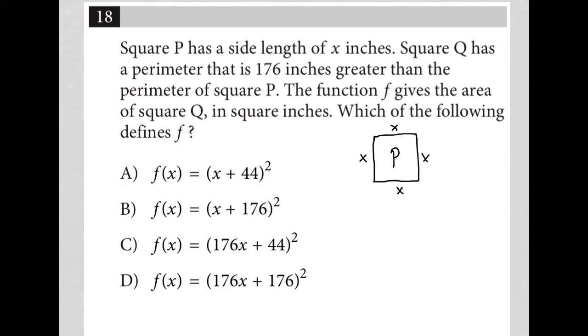Square Q has a perimeter that is 176 inches greater than the perimeter of square P. So Q, and I'll say little P for perimeter, is equal to 4X. Why 4X? Because that is the perimeter of square P, just adding up all the sides, 4X. But it's 176 inches greater than that, so plus 176.